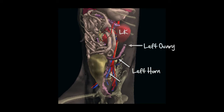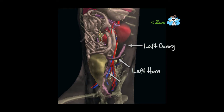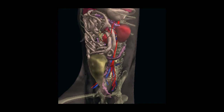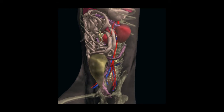Each ovary can be distinguished where the horns reach the kidneys. The ovaries measure approximately 2 cm in length in dogs and 1 cm in cats, whereas the horns measure between 3 and 8 mm in thickness during estrus. This makes them difficult to locate in certain dogs and especially in cats. The size of the reproductive tract will vary depending on the estrus cycle and will be most easily detected during estrus.